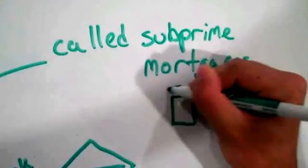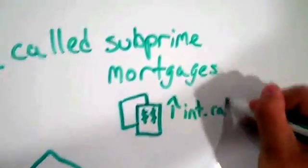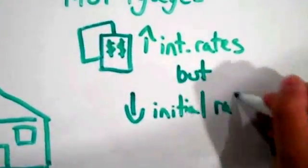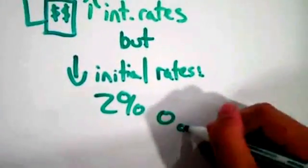No credit history, or people who have a history of late or missed payments. These loans often had higher interest rates to compensate for the risks the banks were taking on.